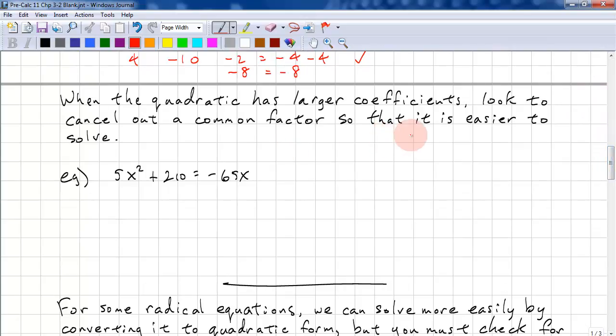When the quadratic has large coefficients, we want to look to cancel out any common factors so that it's easier to solve. For example, 5 is the factor of this one. This ends in 0, so it's divisible by 5. This one ends in 5, so it's also divisible by 5. So, let's divide everything by 5. We have 5x squared plus 42 equals 5 times negative 13x. Now, we can divide both sides by 5. Move everything over to one side. We have x squared.